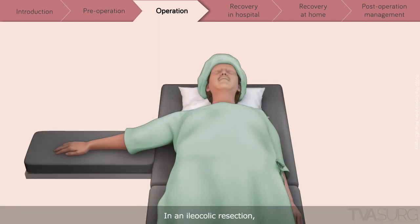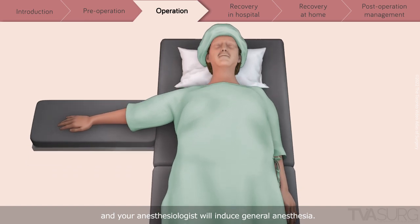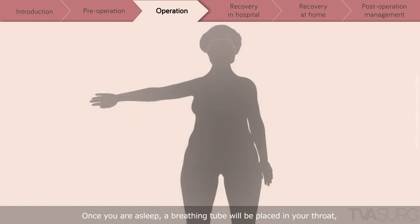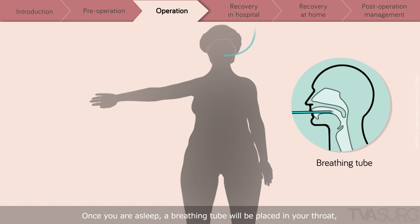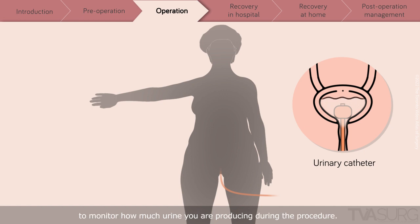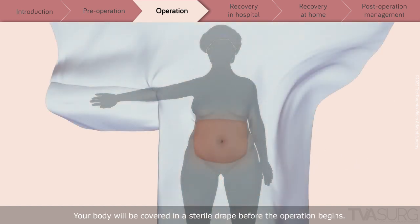In an ileocolic resection, you will lie on your back on the operating table, and your anesthesiologist will induce general anesthesia. Once you are asleep, a breathing tube will be placed in your throat, and a catheter tube will be placed into your bladder to monitor how much urine you are producing during the procedure. The urinary catheter may be left in for one or two days while you are recovering in the hospital. Your body will be covered in a sterile drape before the operation begins.